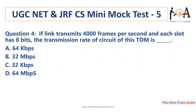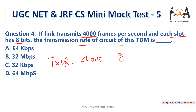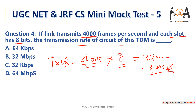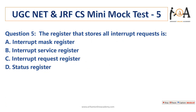The next question: if a link transmits 4000 frames per second and each slot has 8 bits, then the transmission rate of the TDM circuit is 4000 × 8 = 32 kbps. So option C is the correct answer. The next question is: the register that stores all interrupt requests is the interrupt request register. So option C is the correct answer.